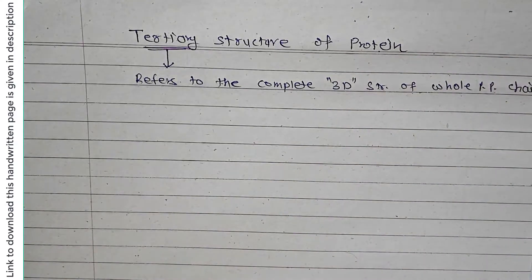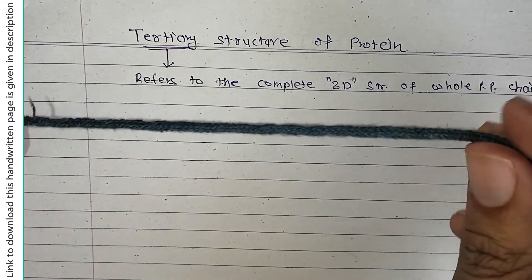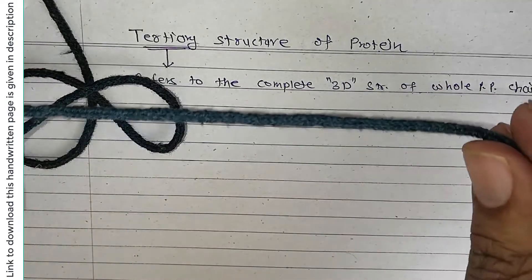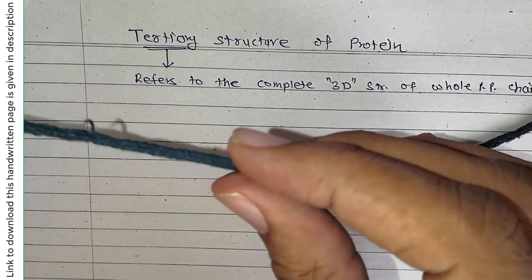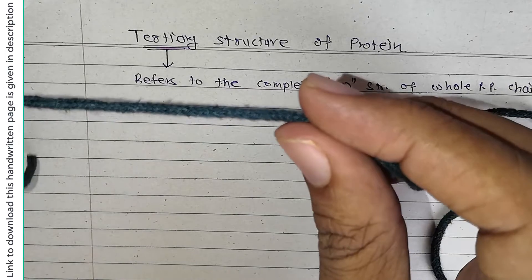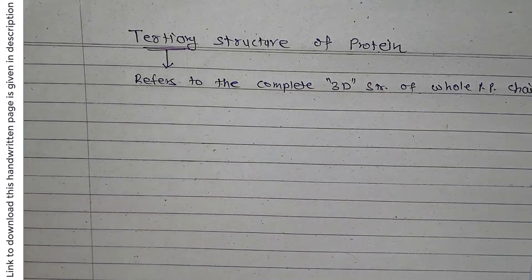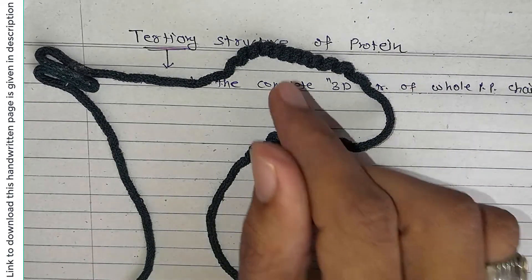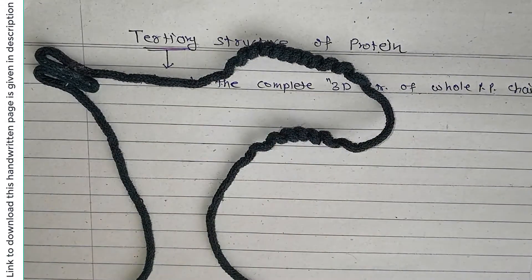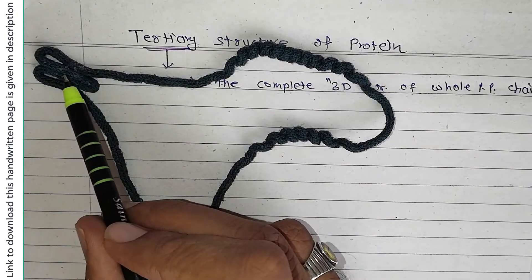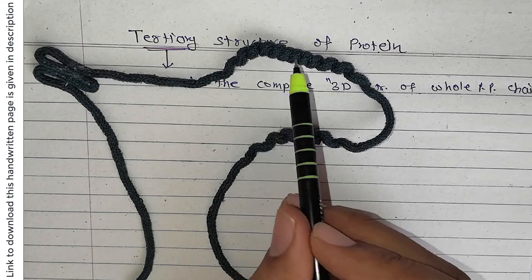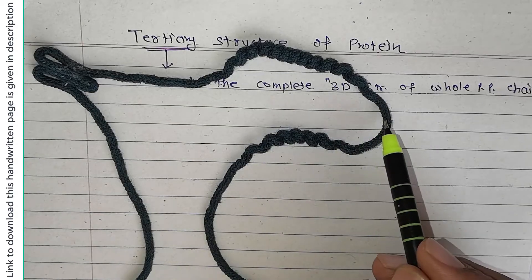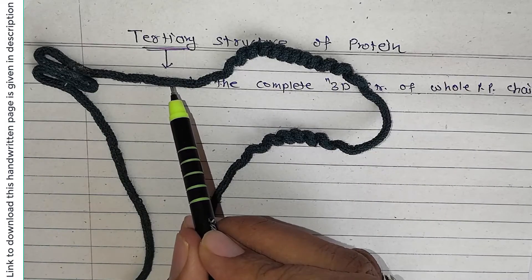Let's understand this with a thread analogy. Suppose this thread represents a sequence of amino acids. In primary structure, we describe the simple sequence of amino acids. In secondary structure, we show the close relationship of nearby amino acids — this is the beta pleated sheet, and this spring-like structure is the alpha helix.